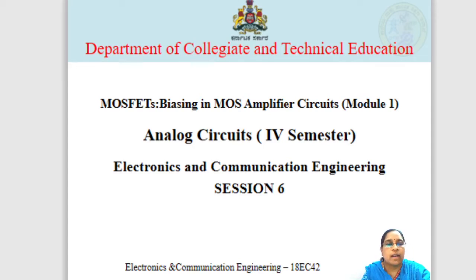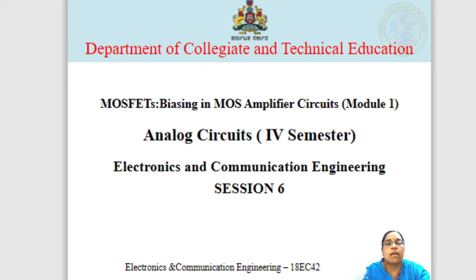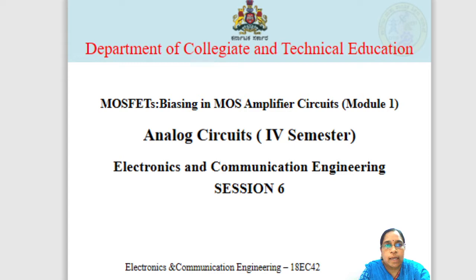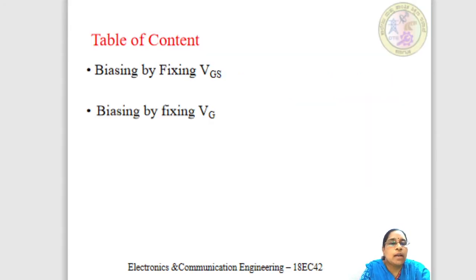Welcome to session 6. In this session, we are going to study biasing in MOS amplifier circuits. This session is related to MOSFETs, that is metal oxide semiconductor field effect transistors. They also have major applications as switches and amplifiers. When MOSFETs are used as amplifiers, we need to design biasing circuits for them. We are going to study different biasing techniques like biasing by fixing VGS and biasing by fixing VG.